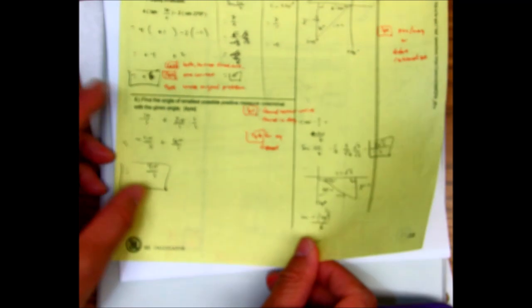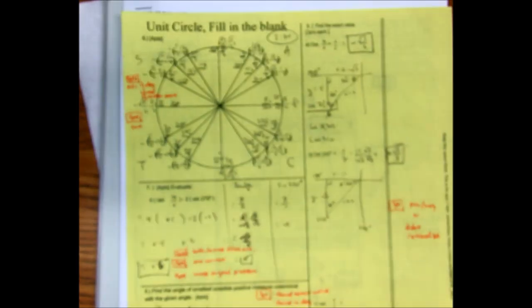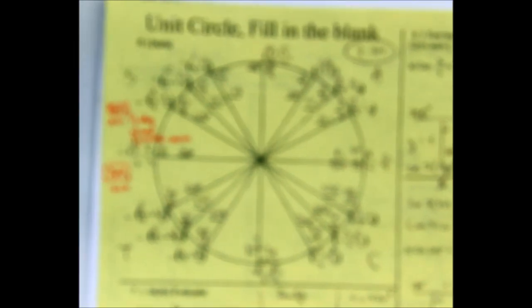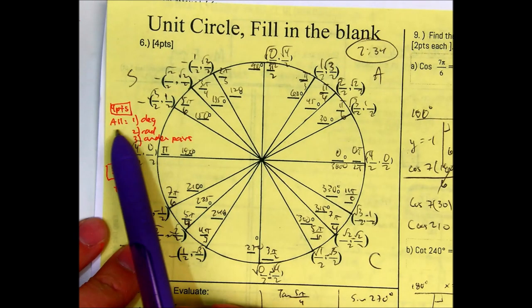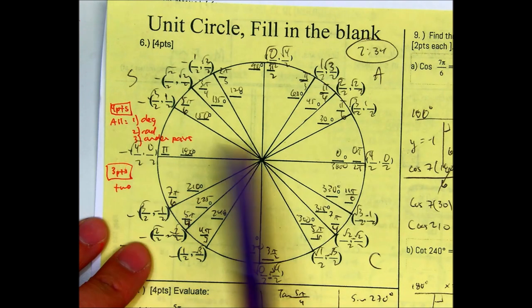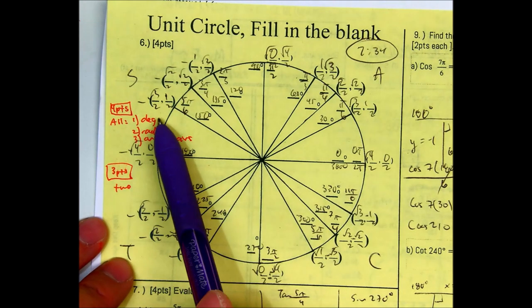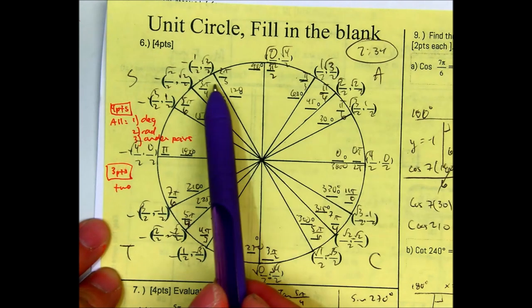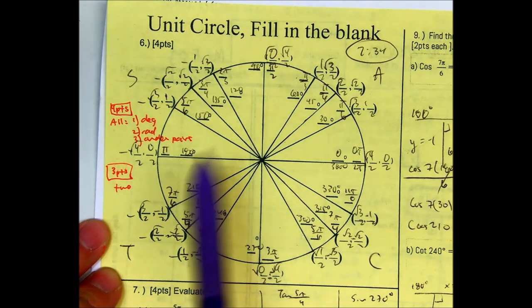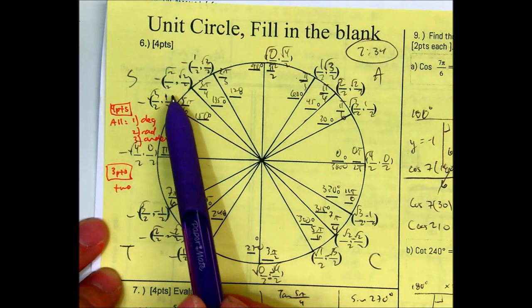Backside. You were supposed to fill out the unit circle. I did mine in 2 minutes and 34 seconds. I was looking that you had all of these for 4 points. I looked around, going around, you had all the degrees correct, all of the radians correct, and all of the order pairs, including their pluses and minuses.